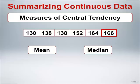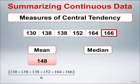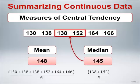Calculation of the mean is straightforward, simply being the sum of the six values divided by 6, here equal to a pressure of 148. The median here is simply the mean of the two middle observations, 138 plus 152 divided by 2, which equals a pressure of 145.